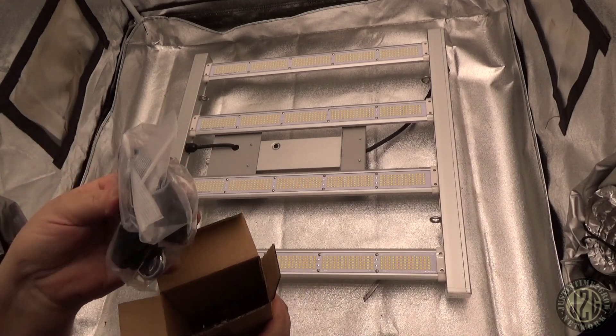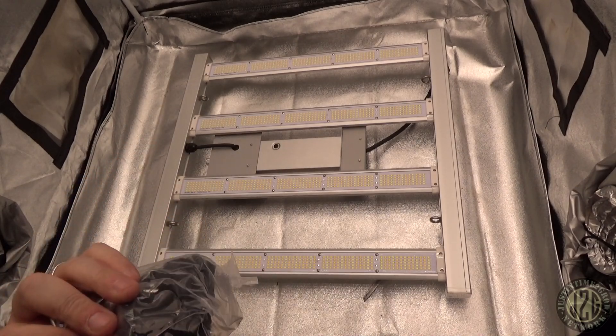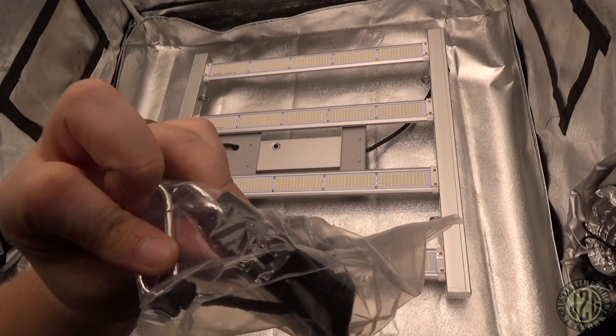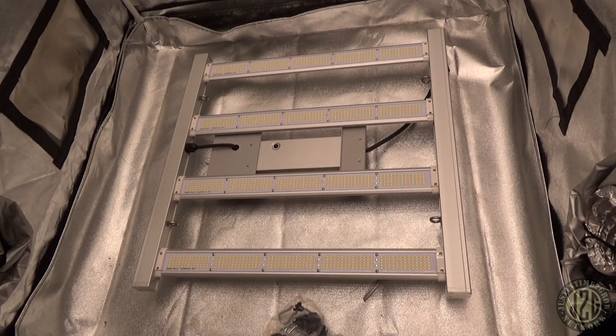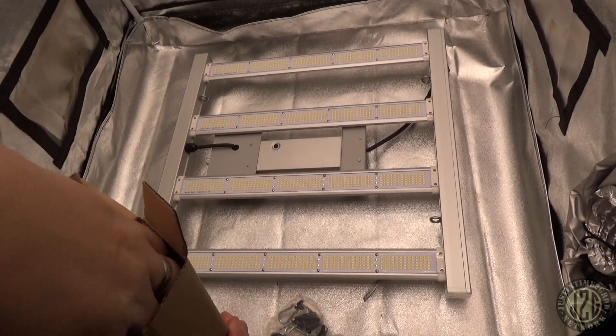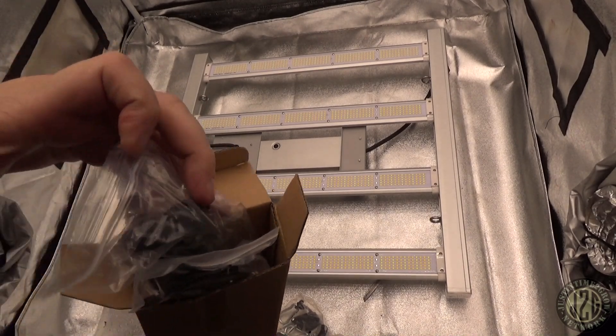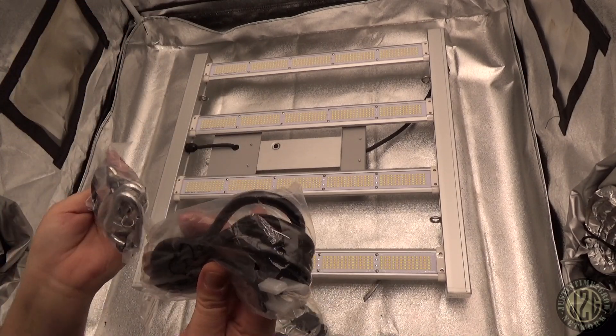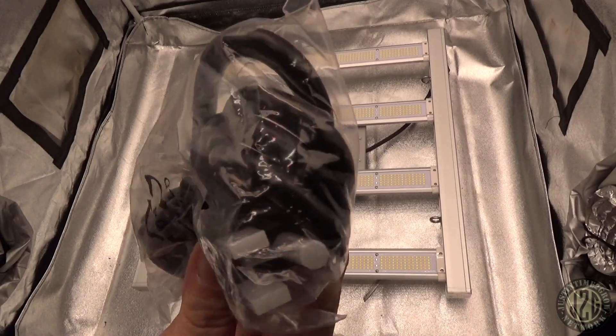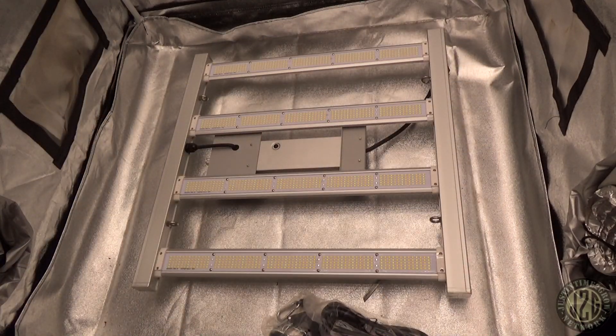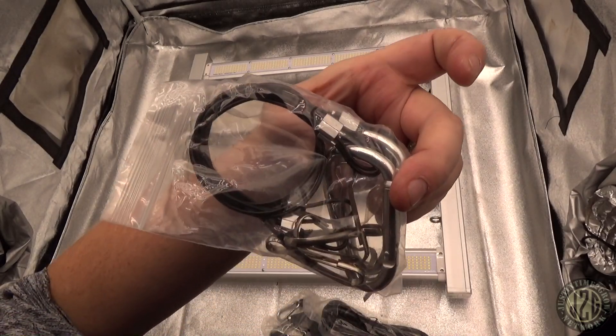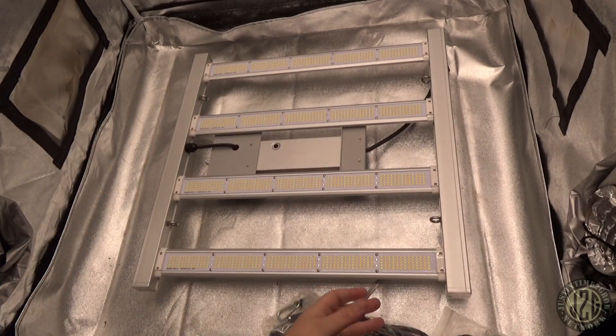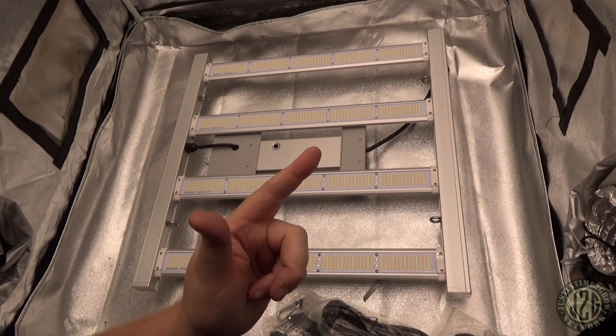Rope ratchets with metal gear on them. Power cord and a hanging kit. So we got your standard power cord and a pretty standard wire hanging kit with the carabiners. Pretty cool. Let's get this sucker hooked up and get some power pushing.